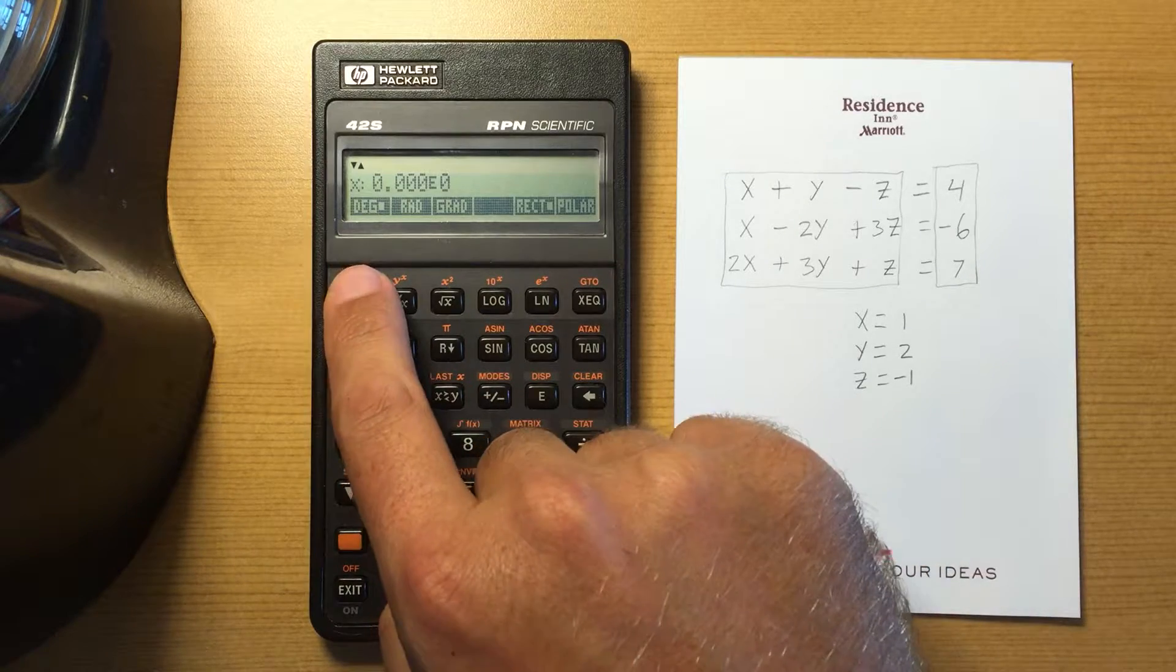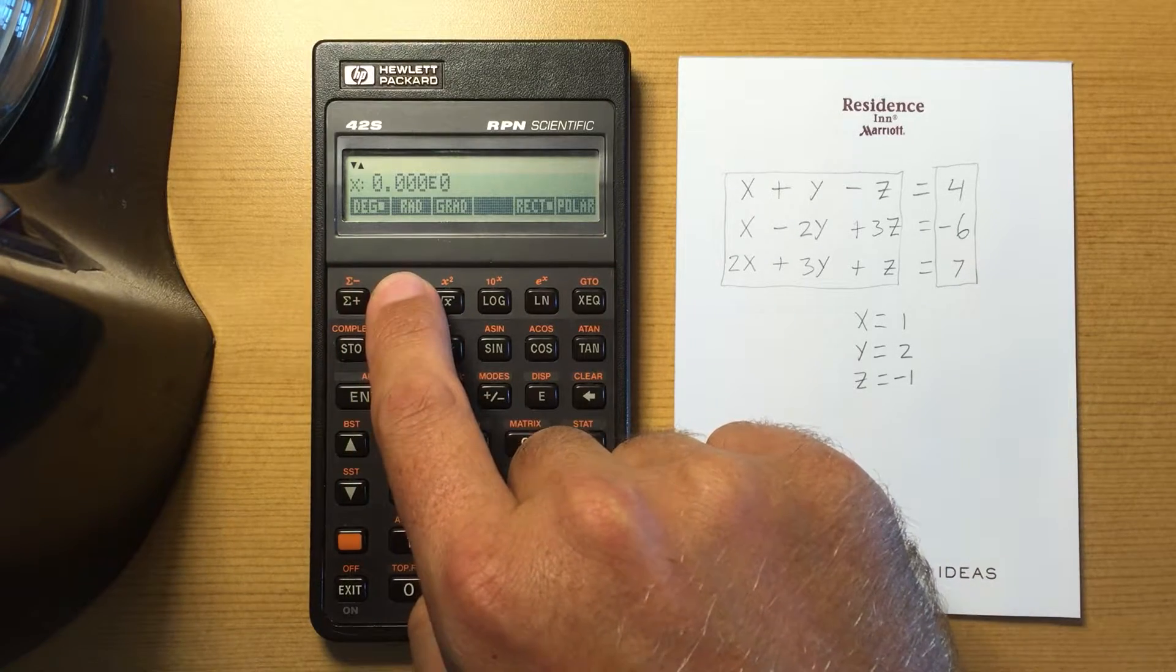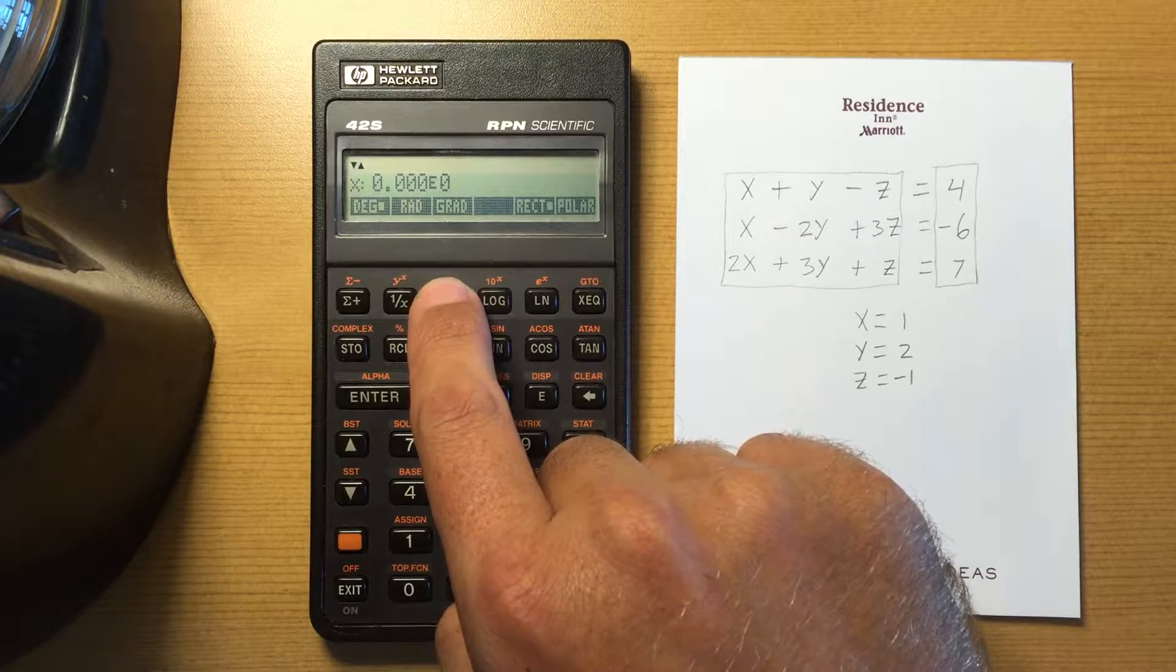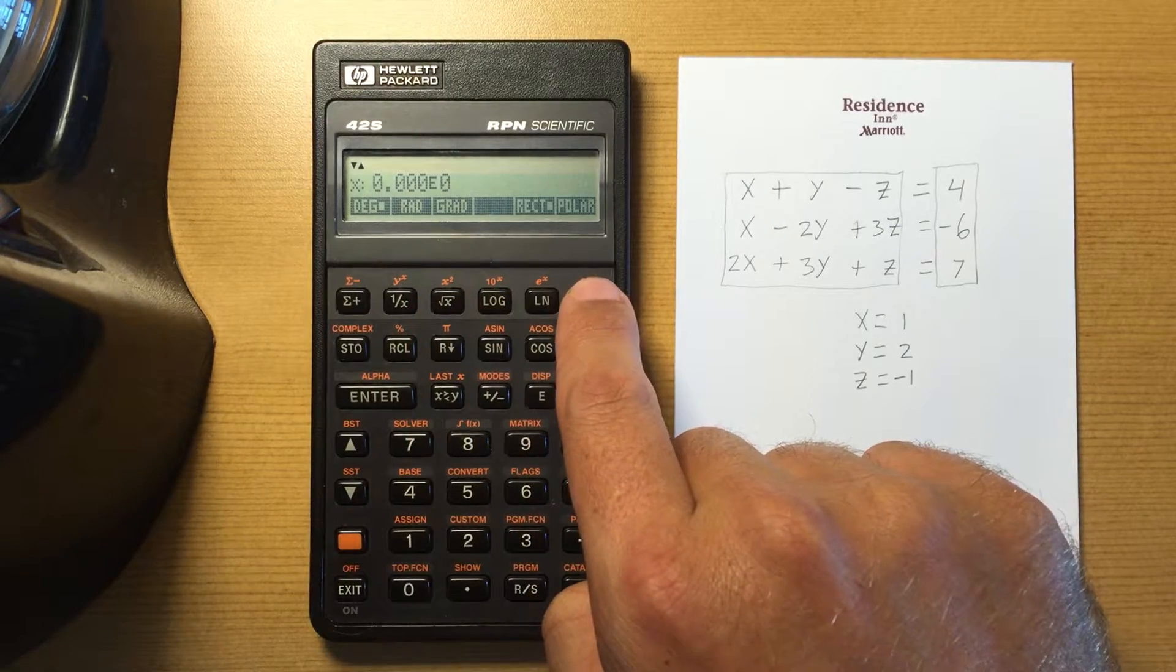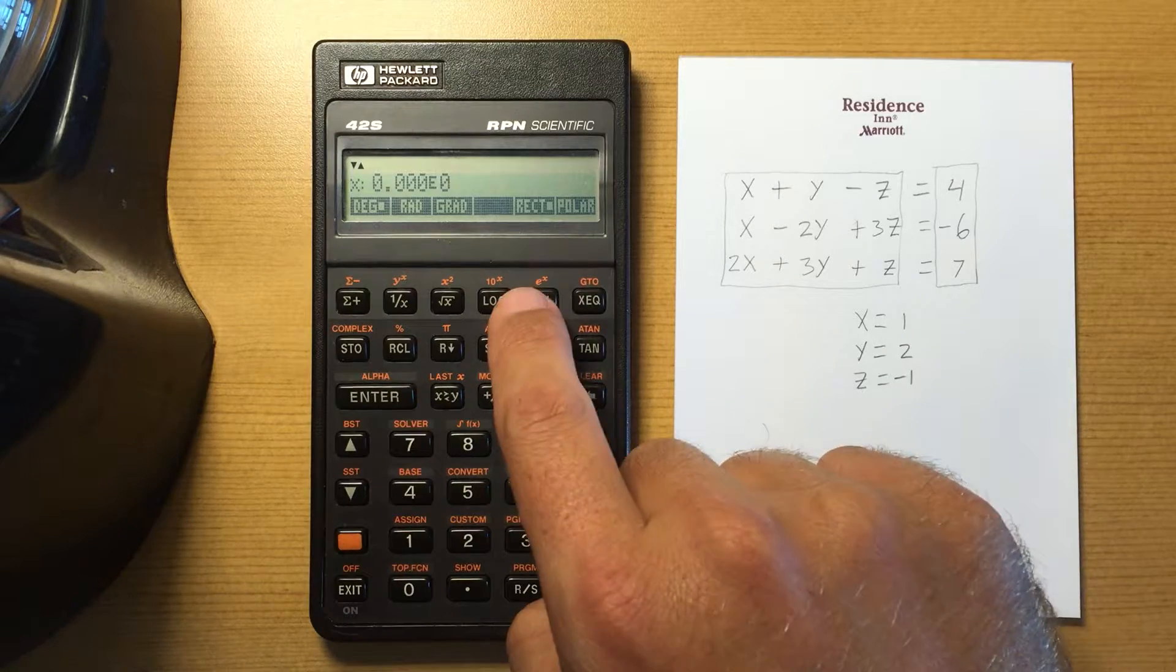In modes you have your typical degrees, radians, and grads, and then you have rectangular and polar. That's more for complex numbers, at least that's what I use it for.